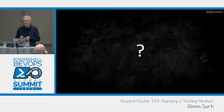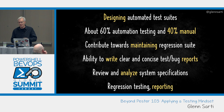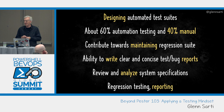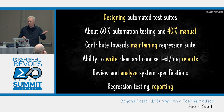So do we actually have any software testers or QA people here today? Didn't think so. A quick way to find out what people do in a job is to look at your local job websites or LinkedIn postings to see what they're asking for. Here are some examples: designing automation test suites, 60% automation and 40% manual, contributing towards maintaining regression suites, ability to write clear and concise bug reports, review and analyze system specifications, regression testing, reporting. Software testing sounds like a really boring job.